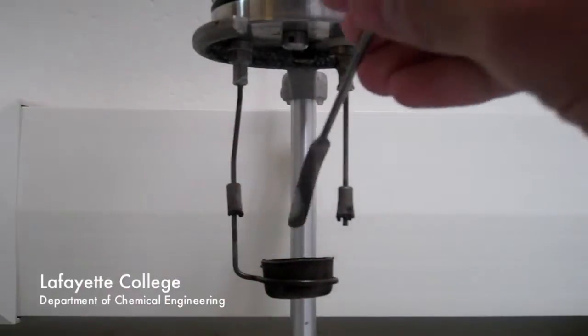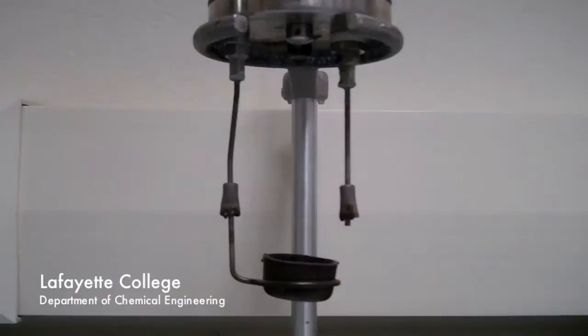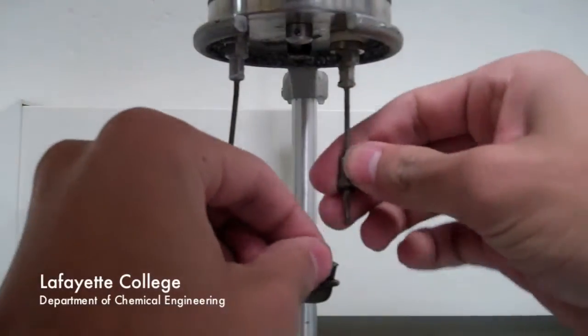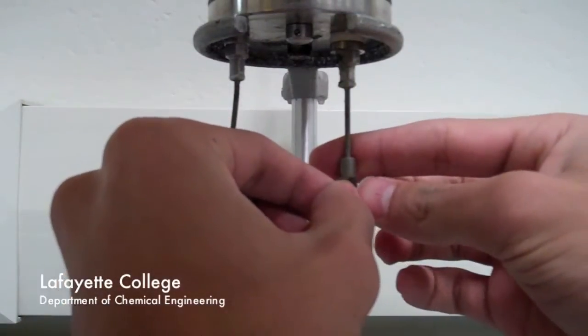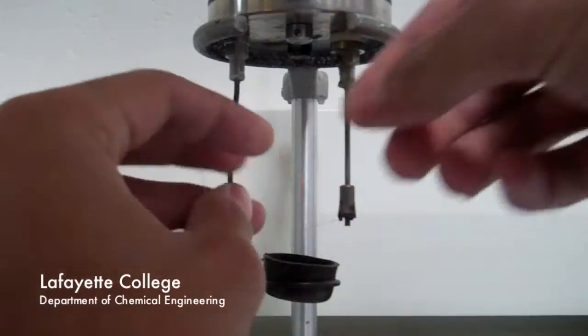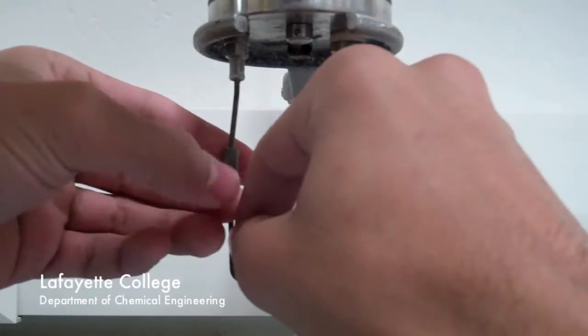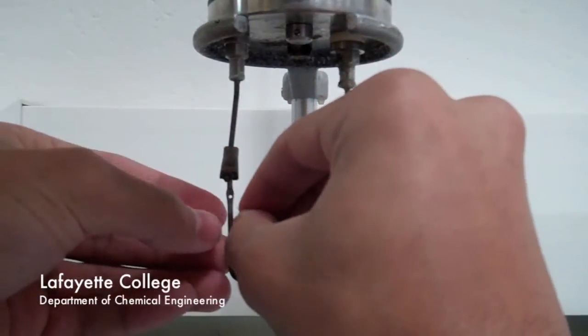Next, place your mass sample inside the sample bucket. Cut a 10 cm long fuse wire and attach it to the metal arms as shown. Lift up the clamps, feed the wire through the holes, and lower the clamps on top of the wire.